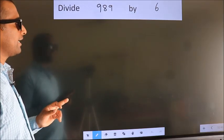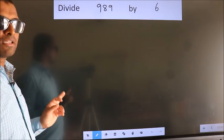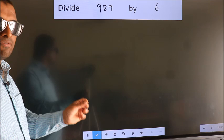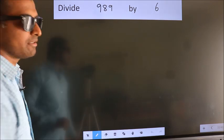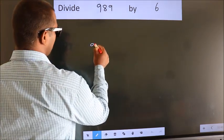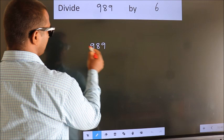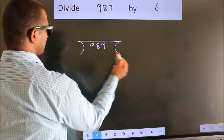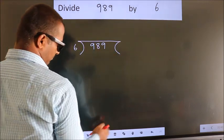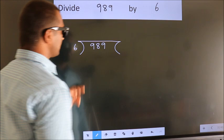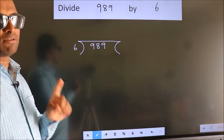Divide 989 by 6. To do this division, we should frame it in this way: 989 here, 6 here. This is your step 1.